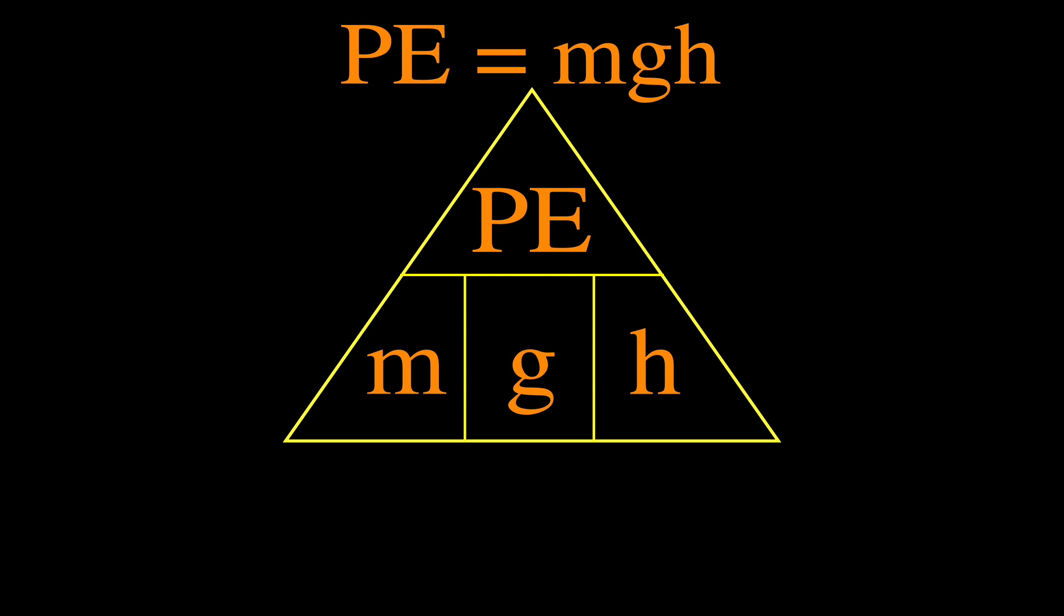Now we want to be able to use this equation and triangle to solve for the mass, the g, and the h. Not so much the g because that's a constant, but definitely for the mass and h. So you put those things in there like that, and let's say we want to solve for the mass. Then what you do is cover up the m.